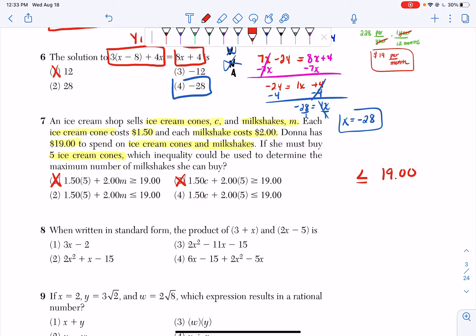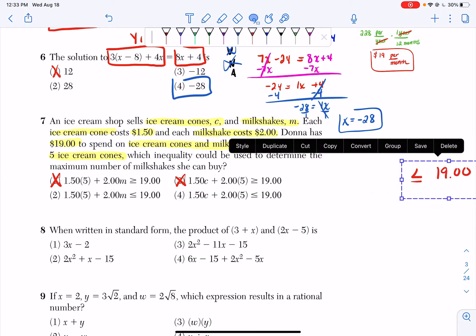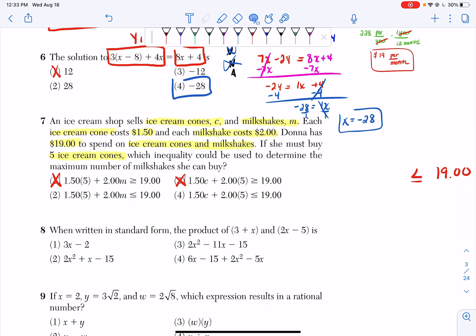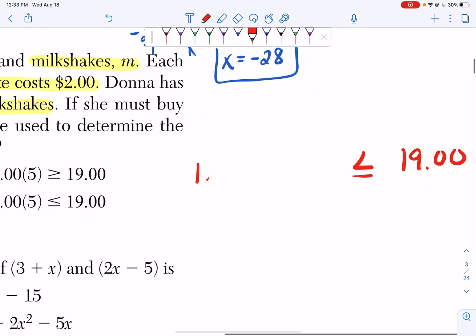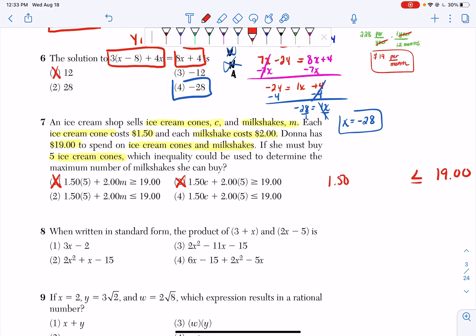Now we're going to use the answer choices to our advantage. We know that ice cream cones cost $1.50, so I'm going to have 1.50. And I know that milkshakes cost $2.